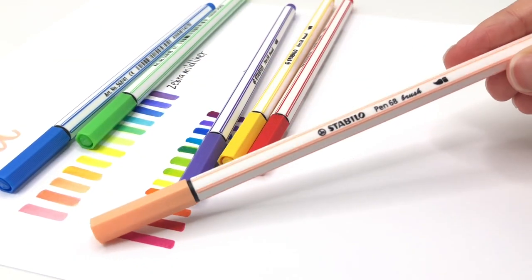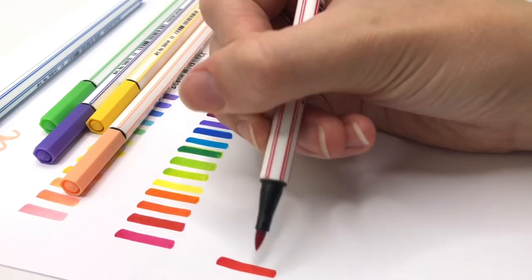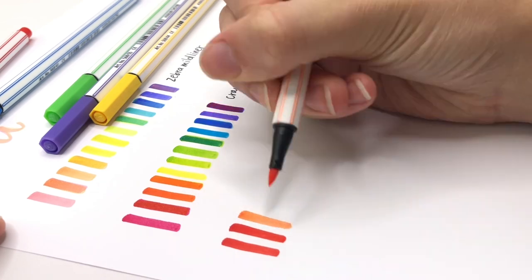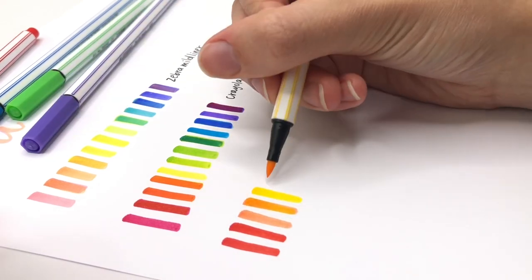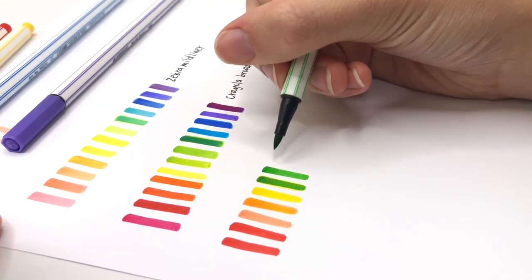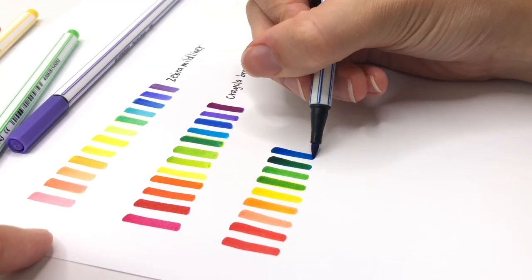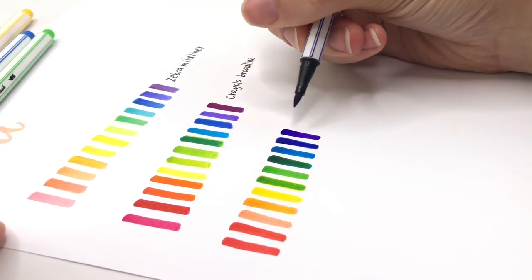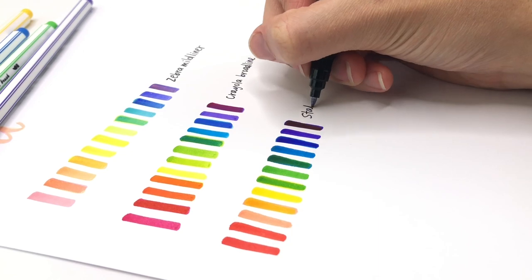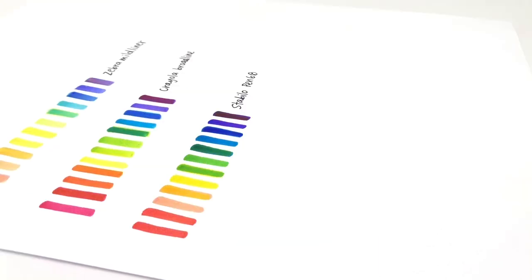Stabilo brush pens. And with these ones, they're not as transparent as the zebra mild liners. And they actually did work once again, but not every color like the Crayola. So I'm wondering if that's just how it is when the ink is too dark.